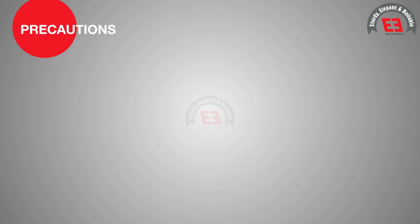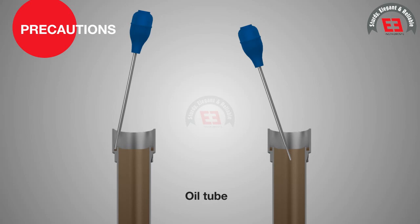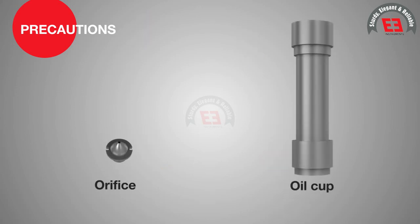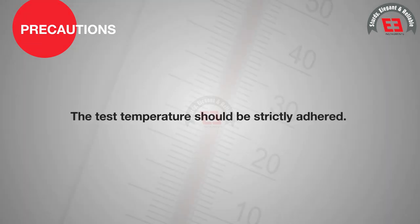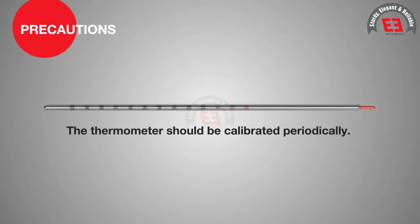Precautions: The test shall be started over again if the tip of the withdrawal tube touches the overflow rim. The oil cup and orifice should be thoroughly cleaned. The test temperature should be strictly adhered to. The thermometer should be calibrated periodically.